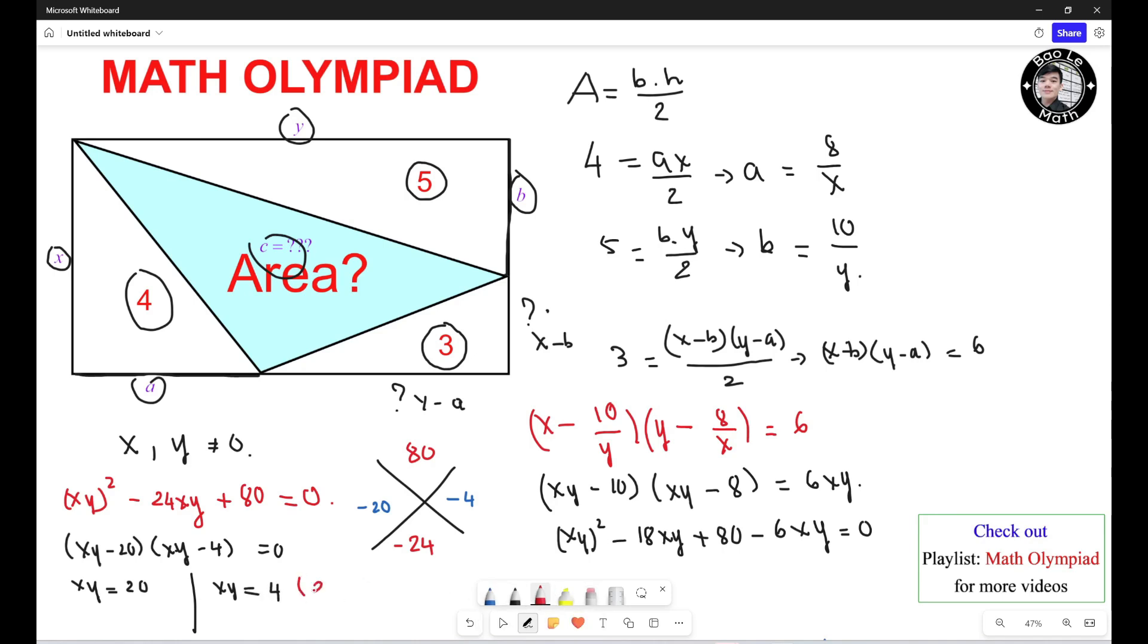This one you need to eliminate. Why? Because you know SY which is the area of the whole rectangle, but the area of the whole rectangle equals 3 plus 4 plus 5 plus C, so this must be greater than 12. And then this is just 4, so this does not work. So this should be 20, right?